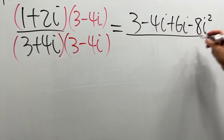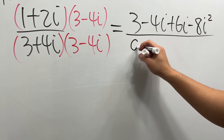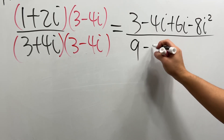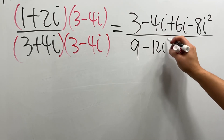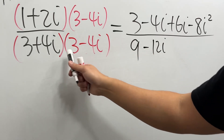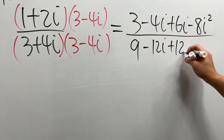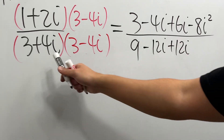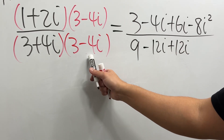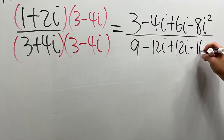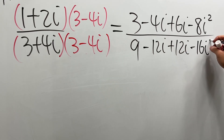Over — this times this is 9. This times this is negative 12i. Continue, we get plus 12i. And lastly, this times this is minus 16i squared.